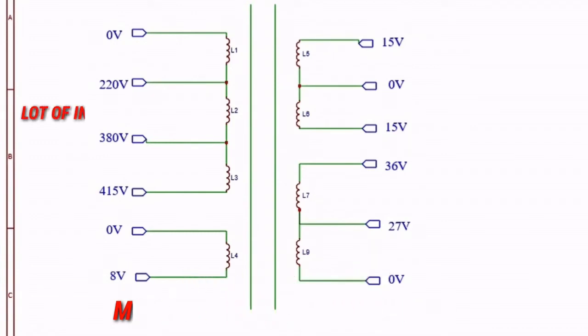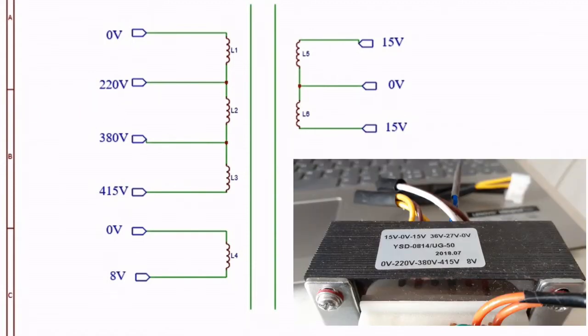we have a lot of inputs to choose from, as well as many outputs or variable outputs. When we look at the primary section of the transformer, 0 to 220 volts is by default our main supply in homes, whereas 380 volts and 415 volts are normally for industrial applications for three-phase.